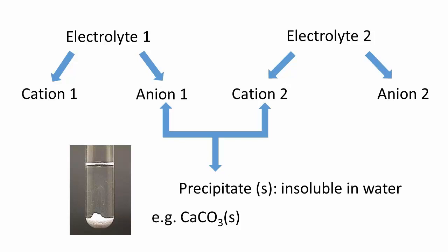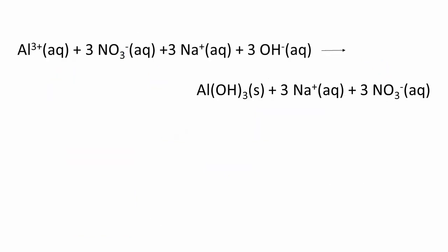When writing the precipitation reaction, we can use the molecular equation, but it ignores the fact that the molecules in question actually dissociate into ions when placed in water. If we account for this, we have the ionic equation.